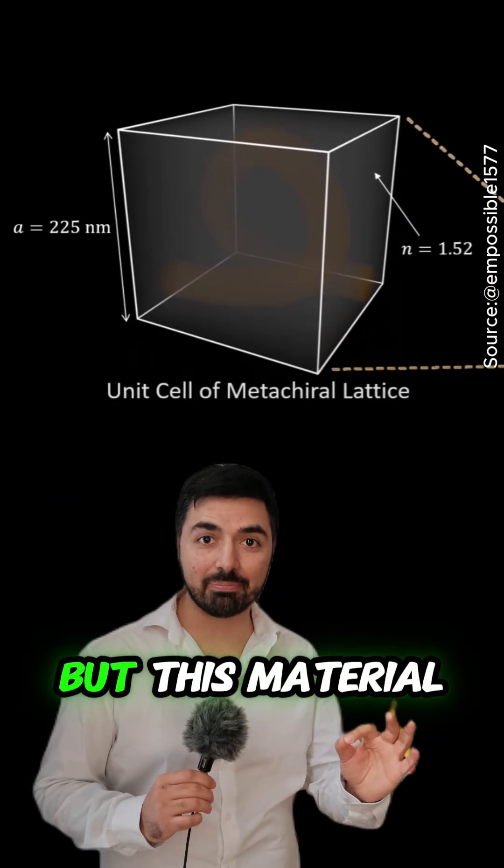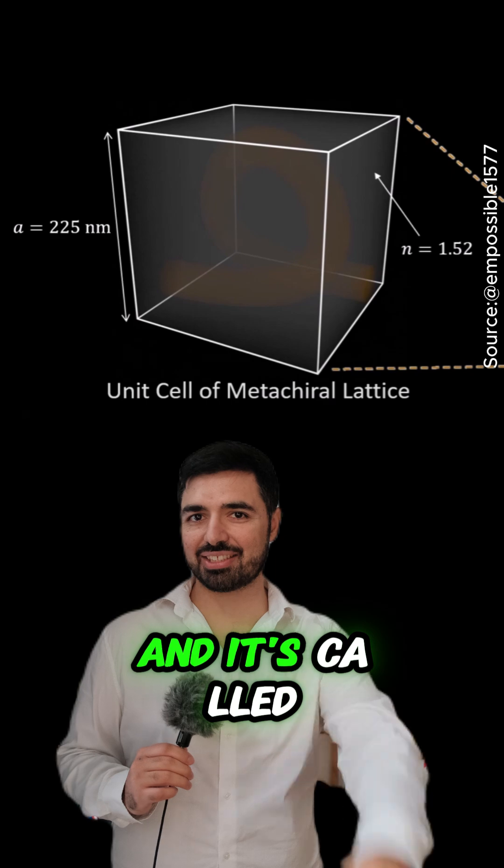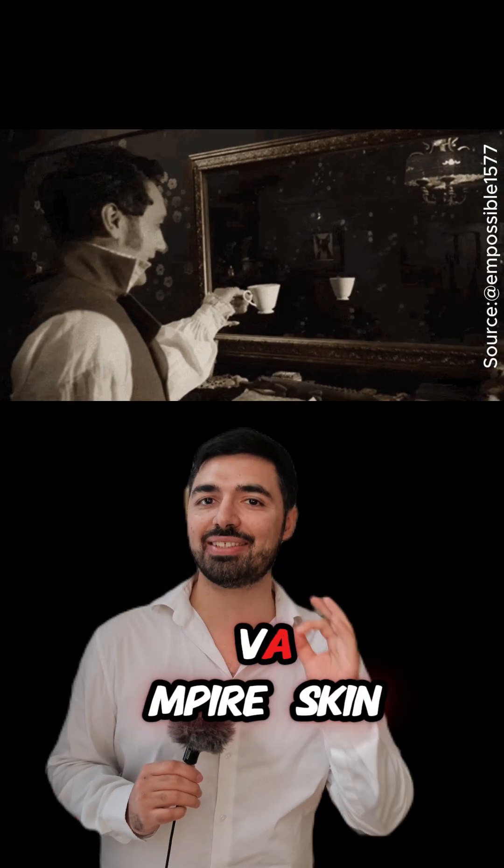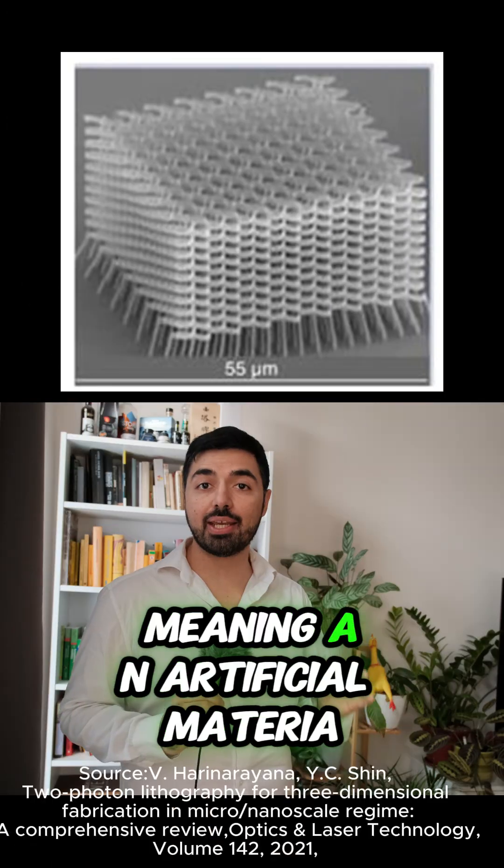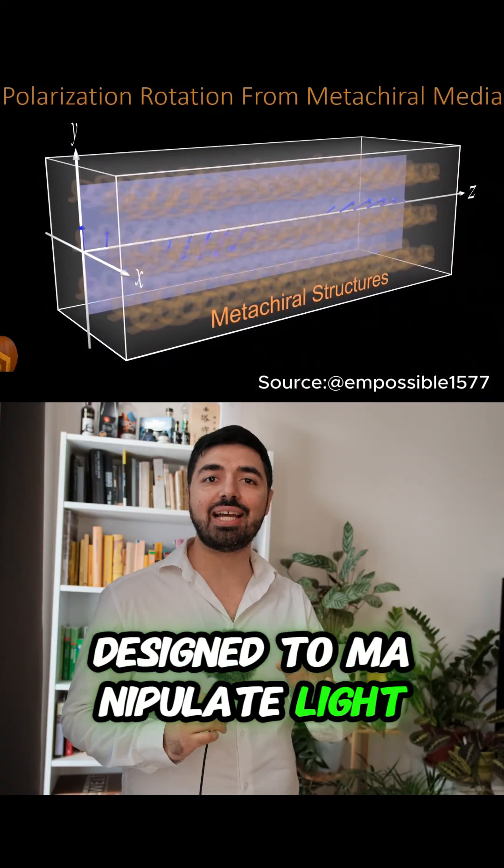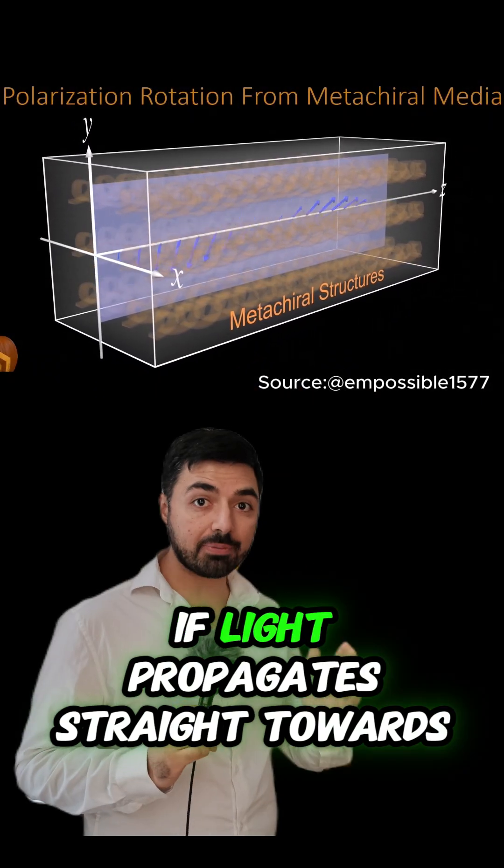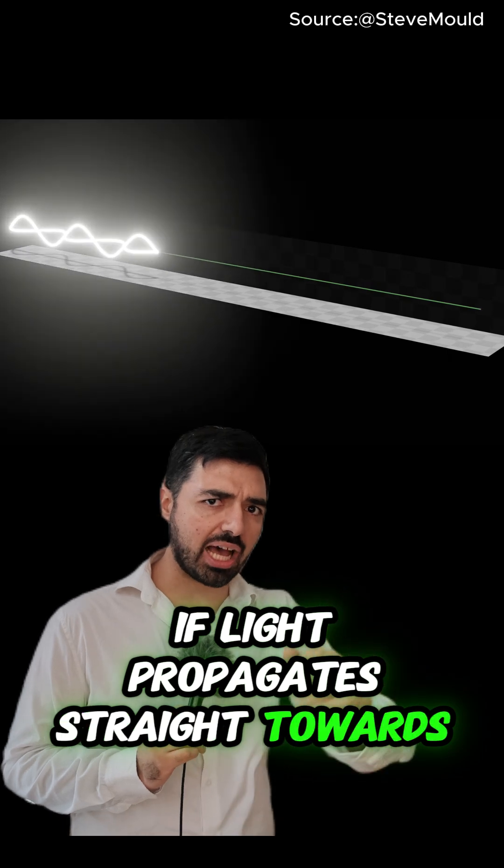It might sound like a joke, but this material actually exists and it's called artificial vampire skin. It's a metamaterial, meaning an artificial material designed to manipulate light in unique ways. If light propagates straight towards us, the electromagnetic field is usually transverse.